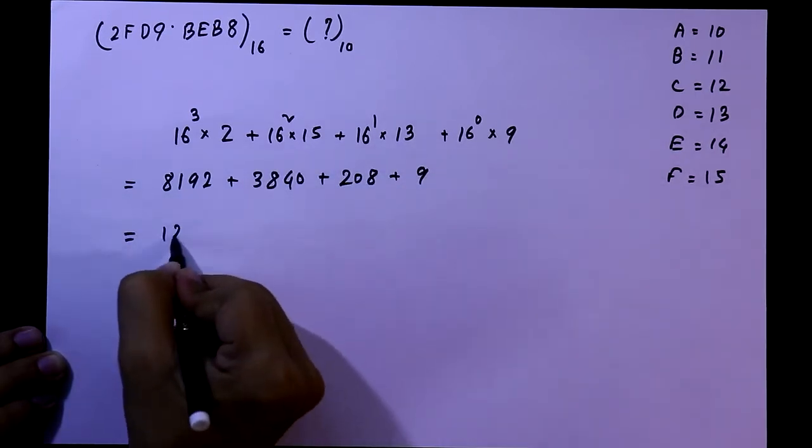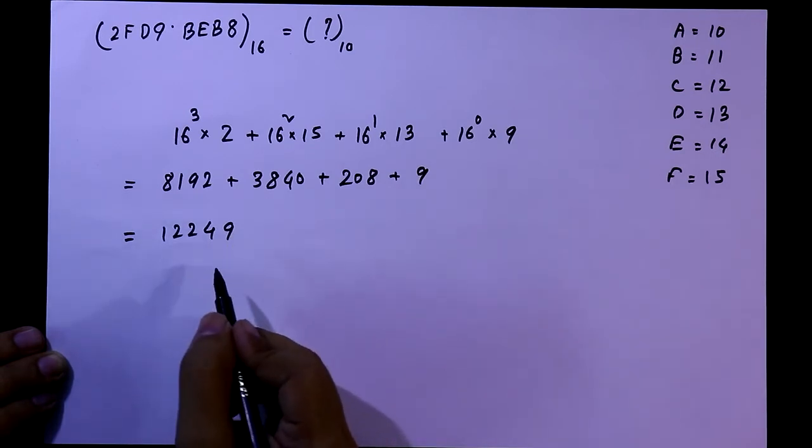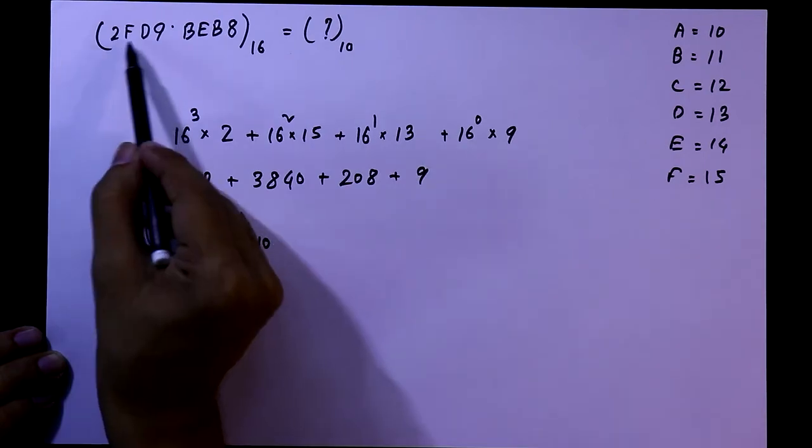1, 2, 2, 4, 9, 12, 249. So this is the equivalent of 2F, D9.